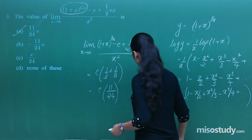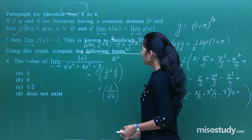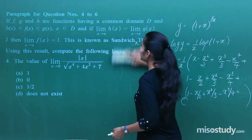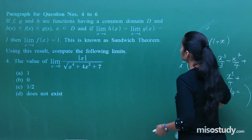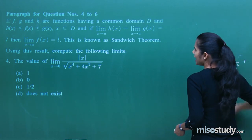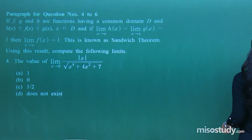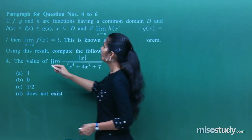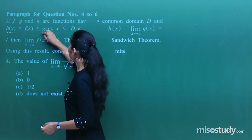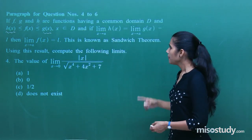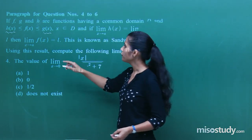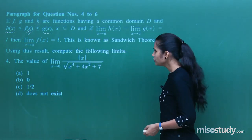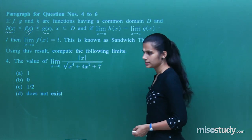Moving on to the next question, we have a paragraph question describing the sandwich theorem: if g(x) ≤ f(x) ≤ h(x) on a common domain D, and the limit of g(x) and h(x) at a certain point are the same, then that is also the limit of f(x). Using this result, compute the following limits.